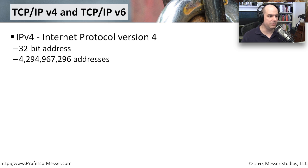This is Internet Protocol version 4. These are addresses that are 32 bits long. Because they're 32 bits long, there's a maximum number of 4,294,967,296 addresses.